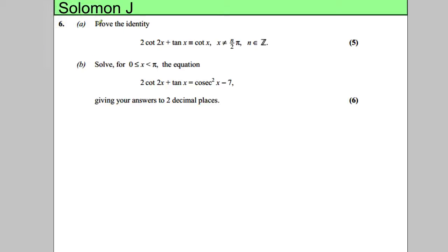In this question, we're asked to prove the identity that 2cot(2x) plus tan(x) is identical to cot(x), where x cannot be some multiple of pi over 2.